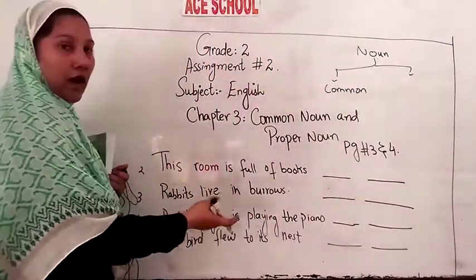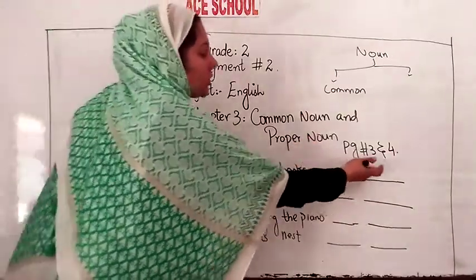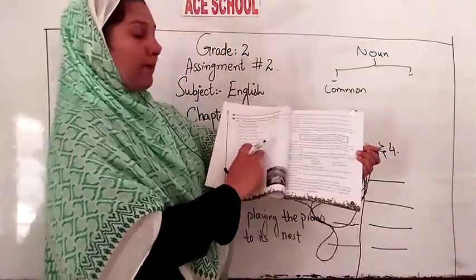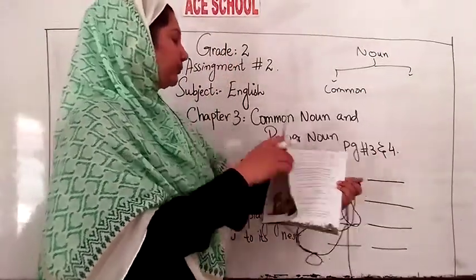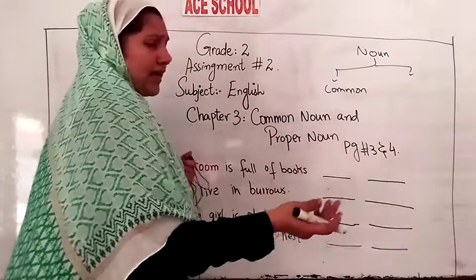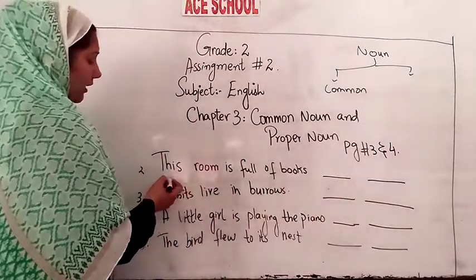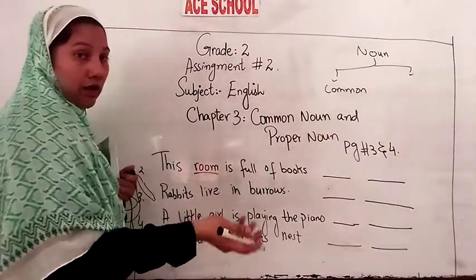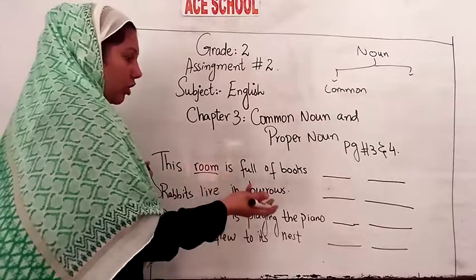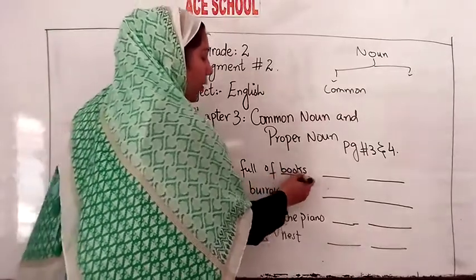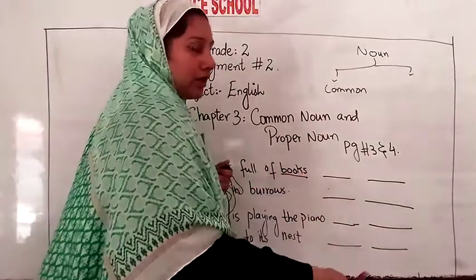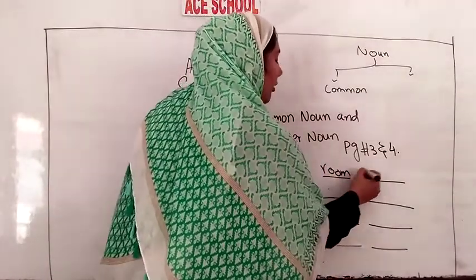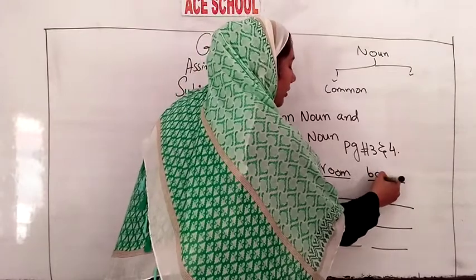For Exercise B, you have to underline the common nouns and write them down. For example: 'This room is full of books.' Room is a name of a place — common noun. Books is a name of a thing — common noun. So room and book are both common nouns.